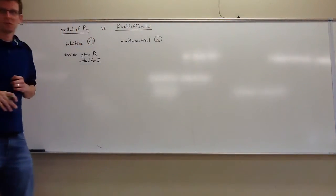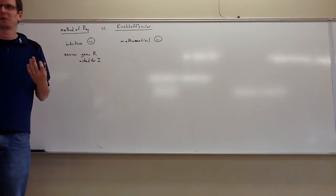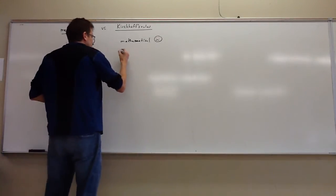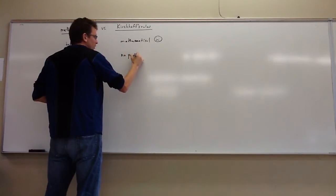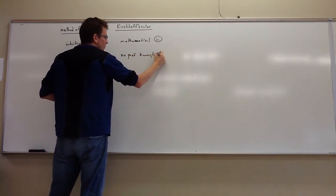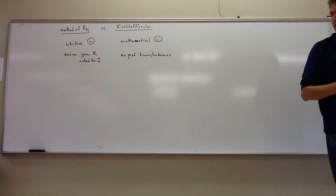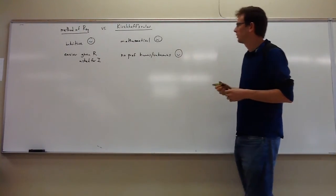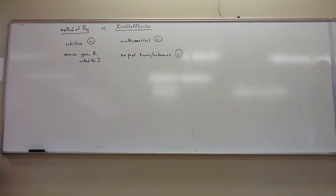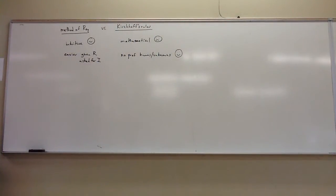An advantage of Kirchhoff's Rules is that even though the math can be annoying, all the unknowns are essentially equivalent — it has no preference between knowns and unknowns. They're all just variables. So yes, it can give you the resistances and ask for the currents, but it could also give you the currents and ask for the resistances. It doesn't matter.